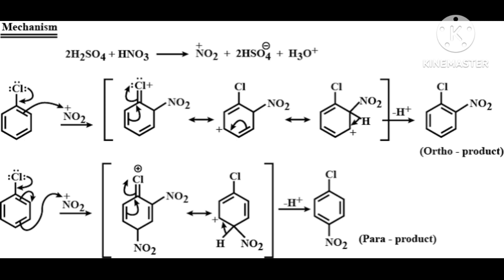I told you about when NO2 is at para and ortho position. Now the third situation: when NO2 is at meta position. Already told — the presence of an electron withdrawing group at meta position will have no effect on reactivity. Now suppose NO2 is at meta position: N is positive charge, one oxygen has double bond with N, other oxygen has single bond, N is positive and O is negative.